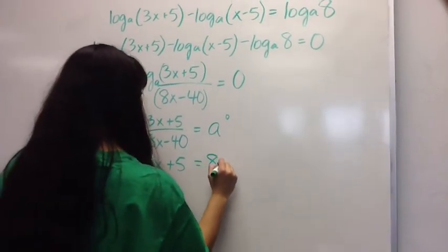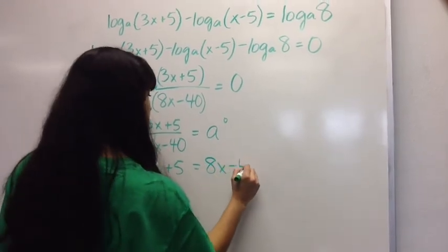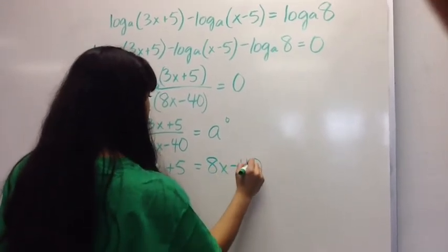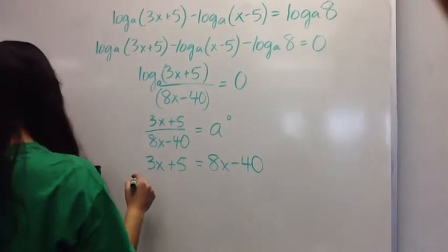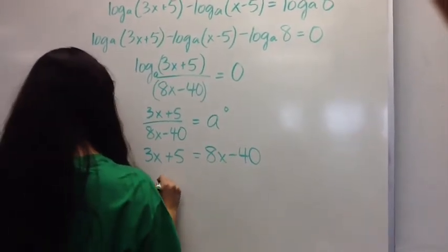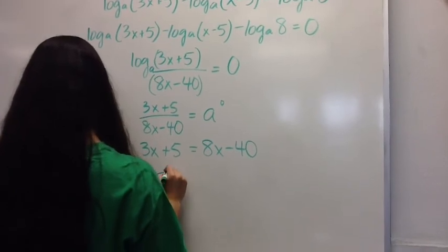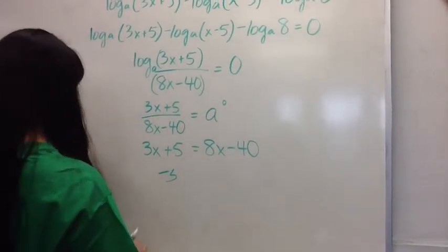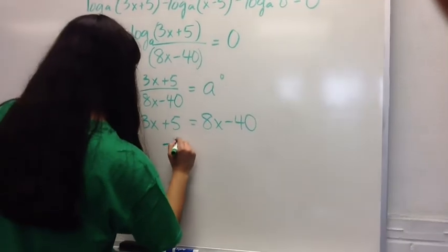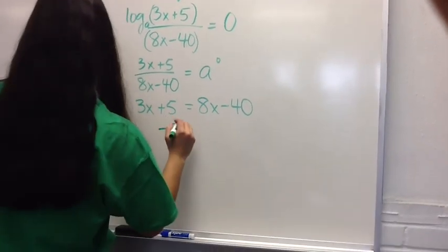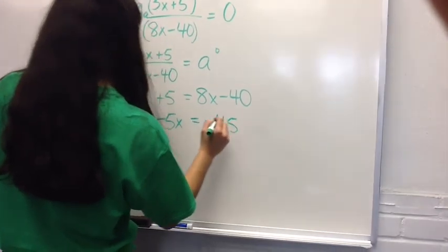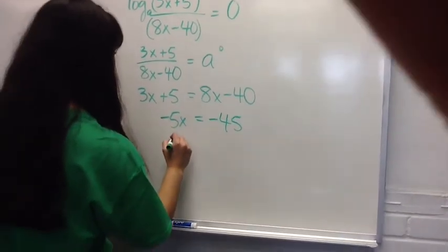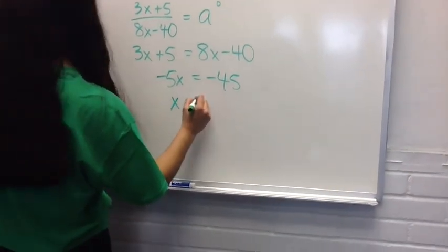And you're going to multiply it out. 3x plus 5 equals 8x minus 40. Subtract the 8x and get negative 5x, and subtract the 5 and get negative 45. So negative 5x equals negative 45 and x equals 9.